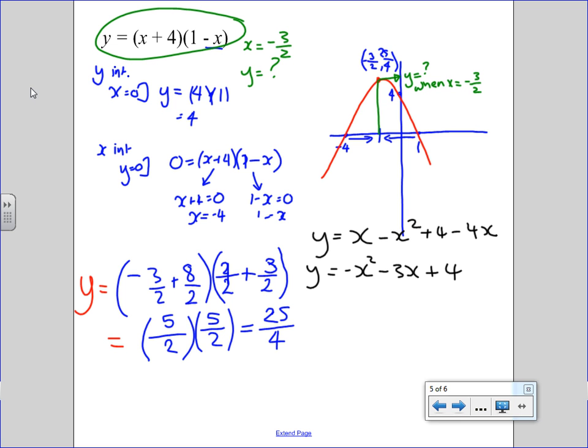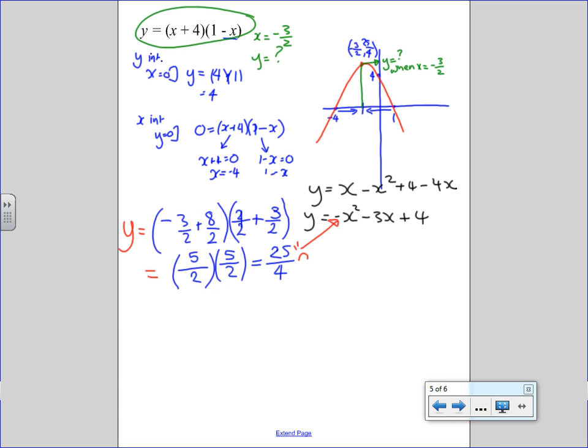X minus X squared plus 4 minus 4X. So, that's minus X squared minus 3X plus 4. Exactly. Now, this minus sign, anything in front of that X squared, means that our normal way of completing the square doesn't work. So, we can't have that there. So, what I'm going to do to get rid of it temporarily is I'm going to multiply both sides of this expression by minus 1. So, I'm going to create a new thing. Minus Y equals X squared plus 3X minus 4.